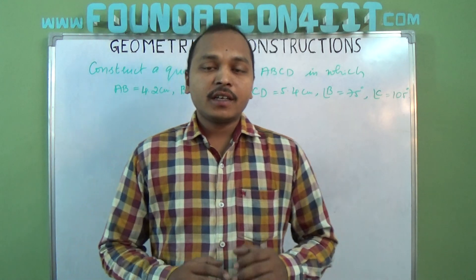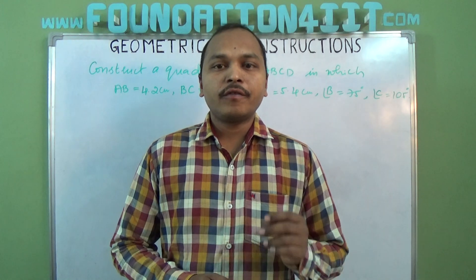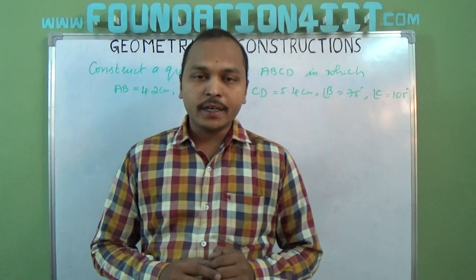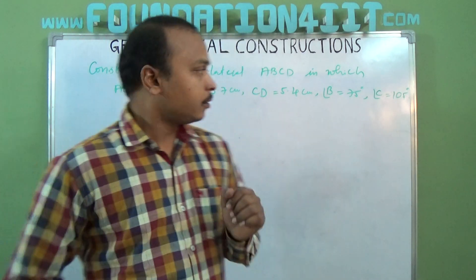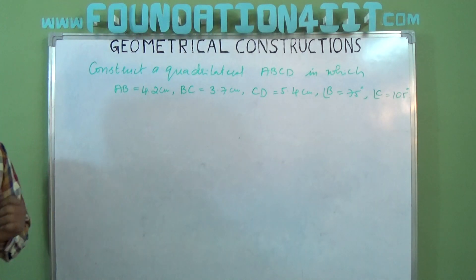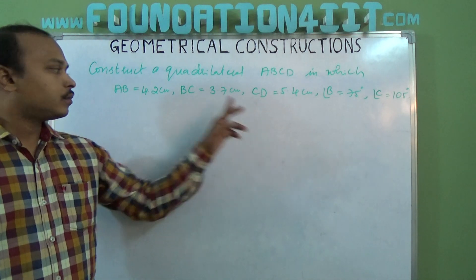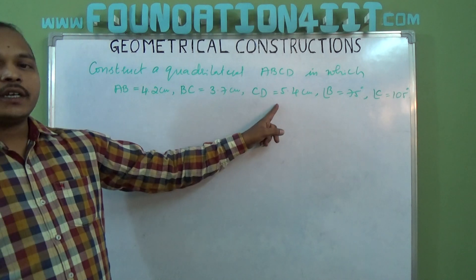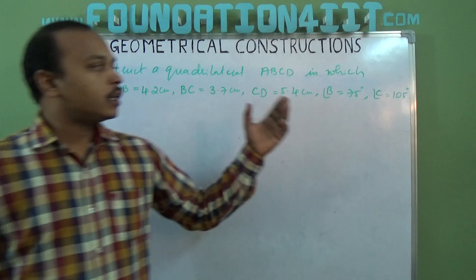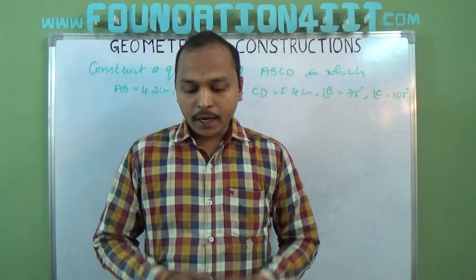Welcome to educational channel. In this video I am going to explain how to construct a quadrilateral when three consecutive sides and two included angles are given. The question is: construct a quadrilateral ABCD in which AB=4.2cm, BC=3.7cm, CD=5.4cm, and included angles B and C are given.